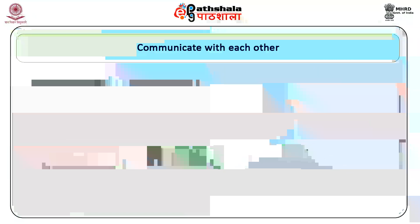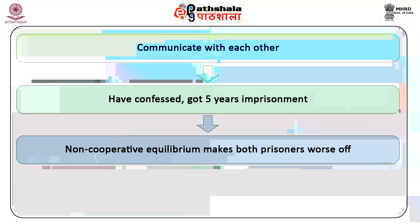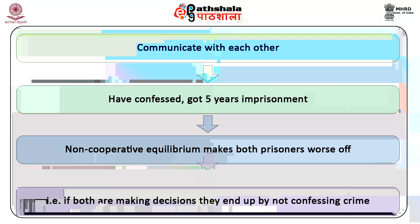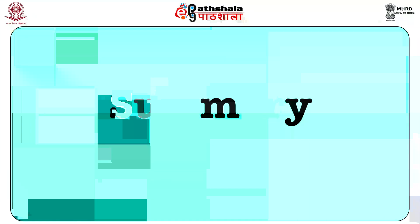But if they had been able to communicate with each other, they would both have confessed the crime and gotten 5 years of imprisonment. Once again, the non-cooperative equilibrium makes both prisoners worse off than if they were able to cooperate — both end up not confessing and receiving 8 years rather than 5.